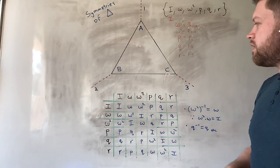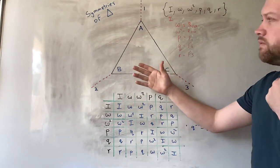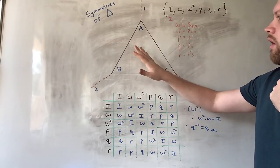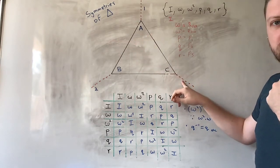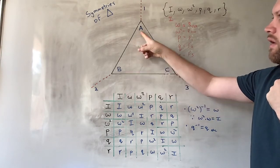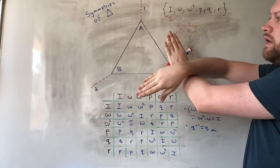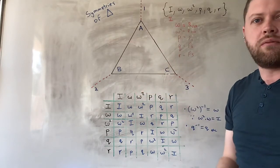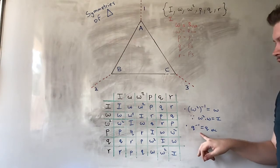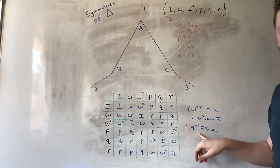For the reason that if, for example, if we flip the triangle around the third axis, then A goes to B and B goes to A. And then if you flip it back again, it returns to its original form. So, in a sense, each of these P, Q, R operations are their own inverse.